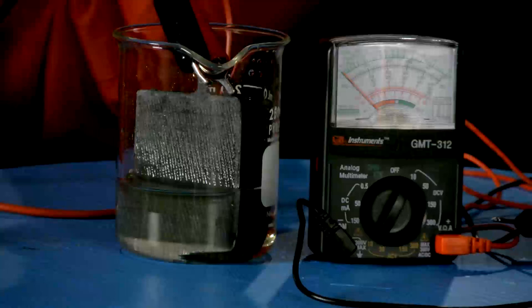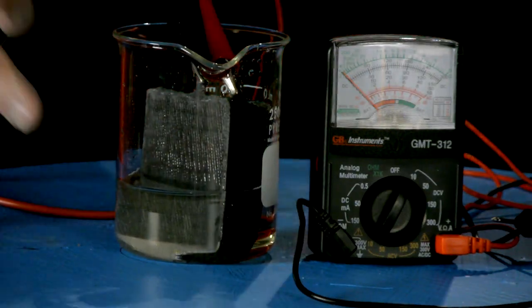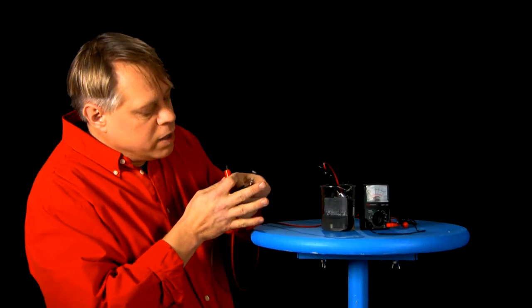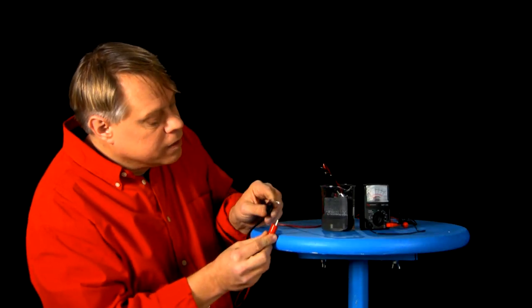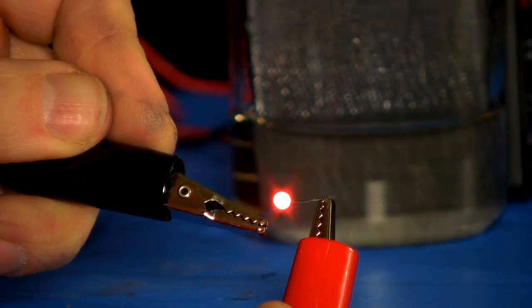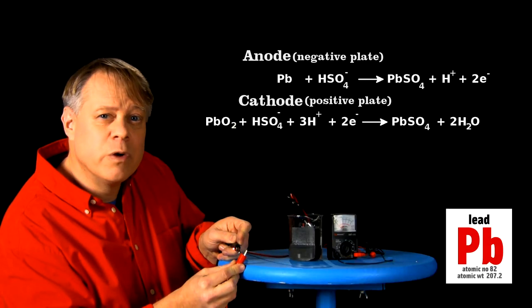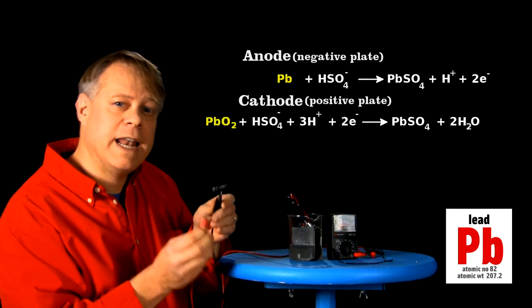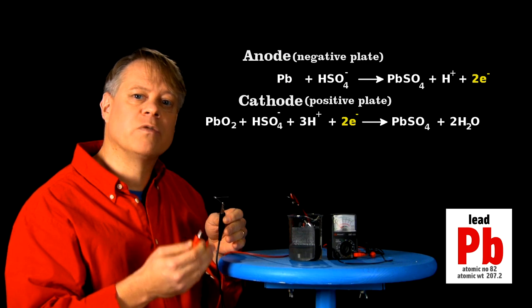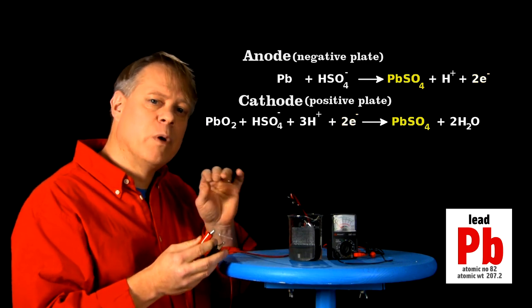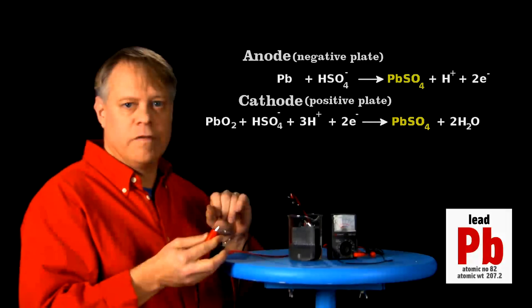So I have here a lead plate and a lead oxide plate from the battery and the sulfuric acid, and now watch what happens when I connect the leads. The LED lights up. A current flows from the lead oxide cathode to the lead anode. The lead gives up electrons which the lead oxide accepts. This exchange turns both plates into solid lead sulfate.